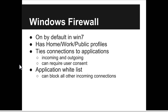Windows Firewall is on by default in Windows 7 and later. There are different profiles for home, work, and public. It ties connections to applications, monitoring incoming and outgoing connections and requiring user consent via UAC consent prompts. It's much easier to configure than iptables or any GUI-based Linux firewall editor. Another good feature is application whitelisting — I'm a huge fan of whitelists.